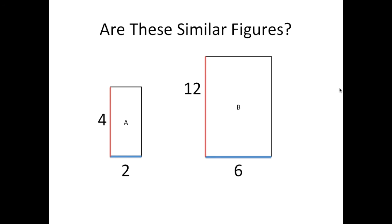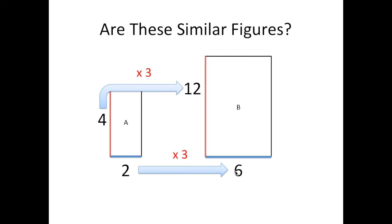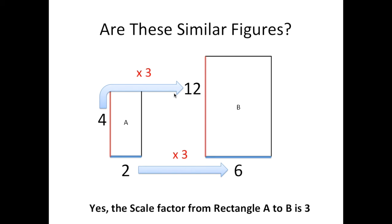Next: are these similar figures? We have to pay attention to our corresponding sides. We have four in rectangle A and twelve in rectangle B — four times three is twelve. Going to our blue sides: two times what is six? Two times three is six. Both corresponding sides are being multiplied by three. Since this is the case, yes, they will be similar, and the scale factor from rectangle A to rectangle B is three.